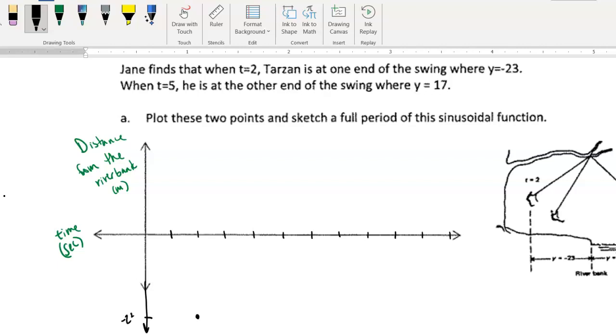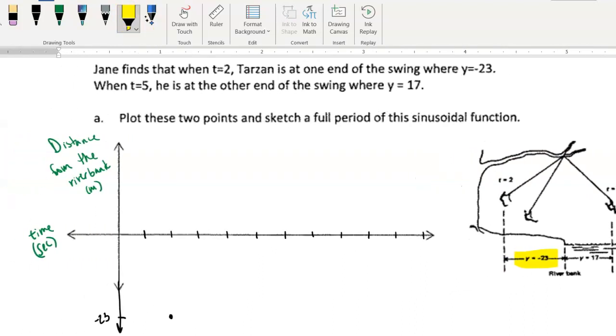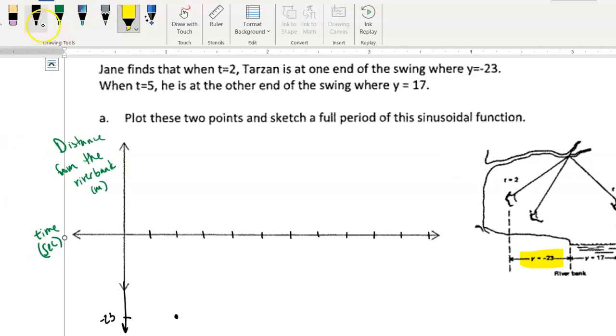It looks like I'm just going to put negative 23 down here. So this would represent after two seconds, so from when she started the stopwatch, he's at negative 23. So again, from the diagram, remember negative 23 means that he is 23 meters from the riverbank. All right, so we got that coordinate.